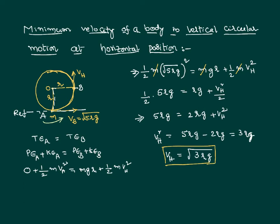If at the bottom the body is moving with minimum velocity, the velocity at the horizontal position is root(3Rg). We can also find the tension at that point, which acts toward the center as the centripetal force: T = mv_h²/r. Since v_h² = 3Rg, we get T = m(3Rg)/r, and r cancels, giving T = 3mg. So the minimum tension at the horizontal position is 3mg. It could be more than this if the velocity is greater.